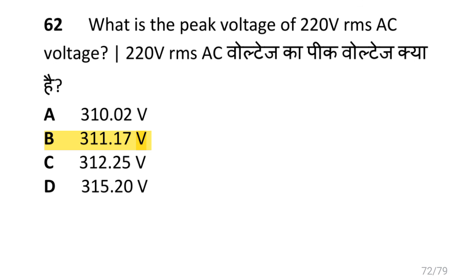What is the peak voltage of a 220V RMS AC voltage? i.e. peak voltage is equivalent to 0.707 multiplied by V_RMS.